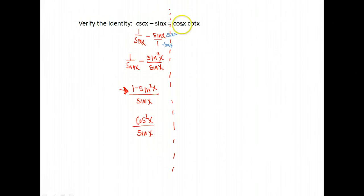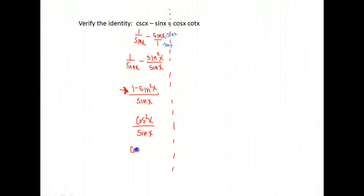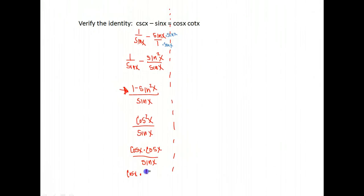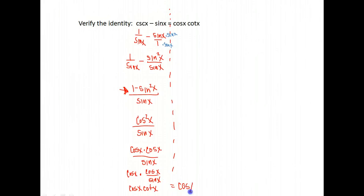I don't have cotangent yet, but I have a cosine, so that's a plus. Notice on the right side I have two things multiplied, and here I have a single fraction. What if we separated this — pulled out one of the cosines? Cosine squared is cosine times cosine, so that's the same as cosine times cosine over sine. And what is cosine over sine equivalent to? It's equivalent to cotangent x. I have shown that this left-hand side simplifies to look exactly like the right-hand side. That is what we do when we verify identities.